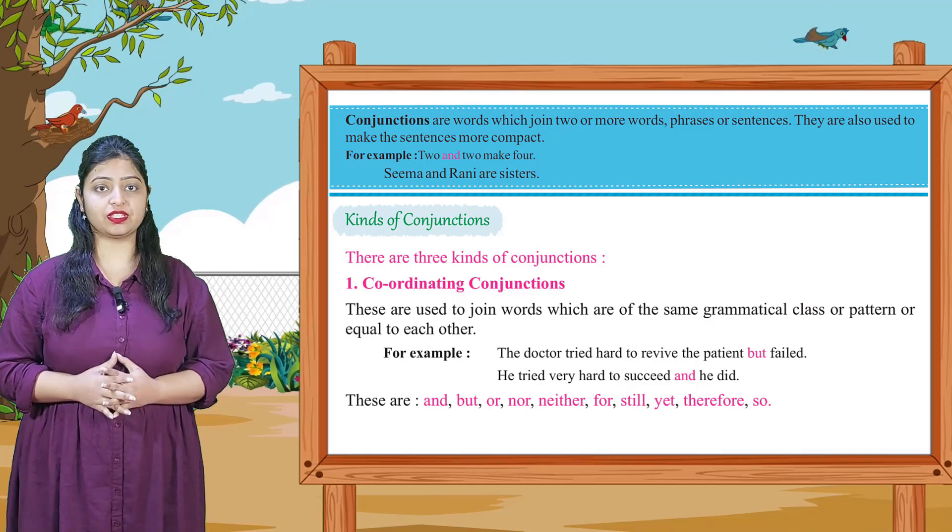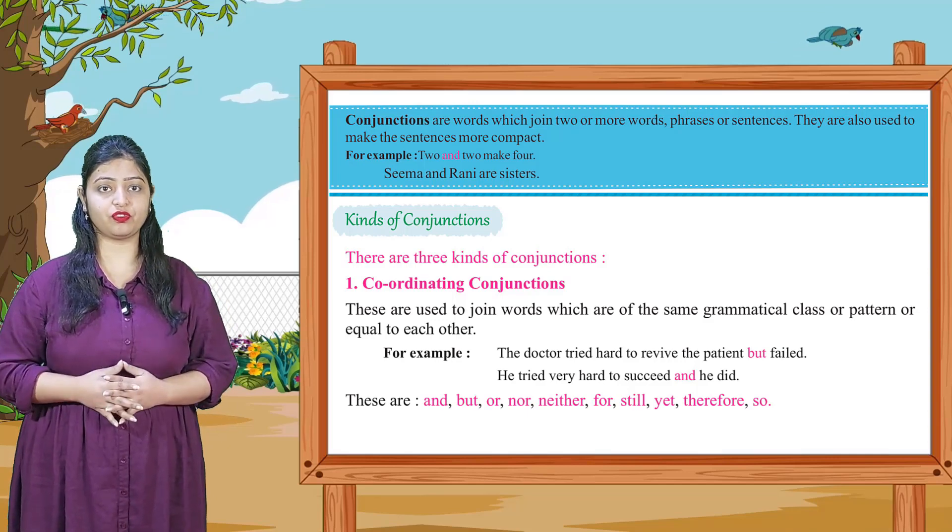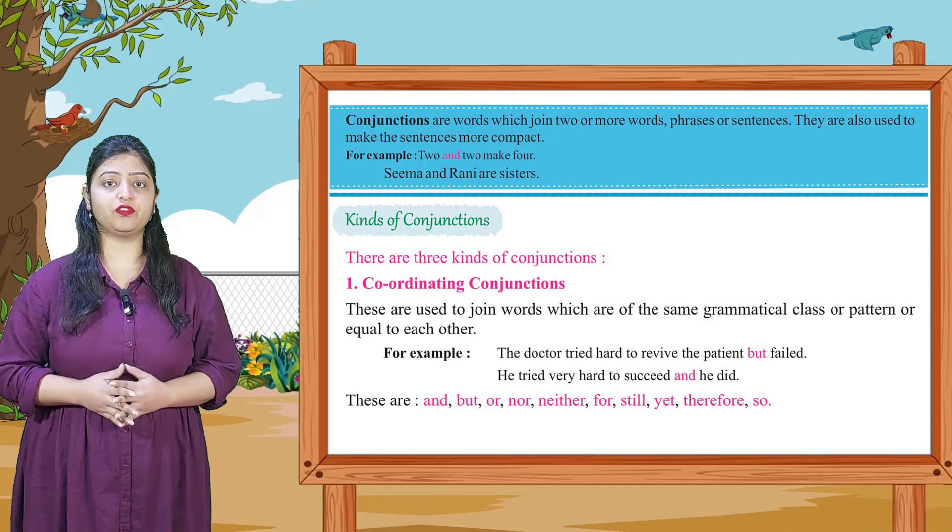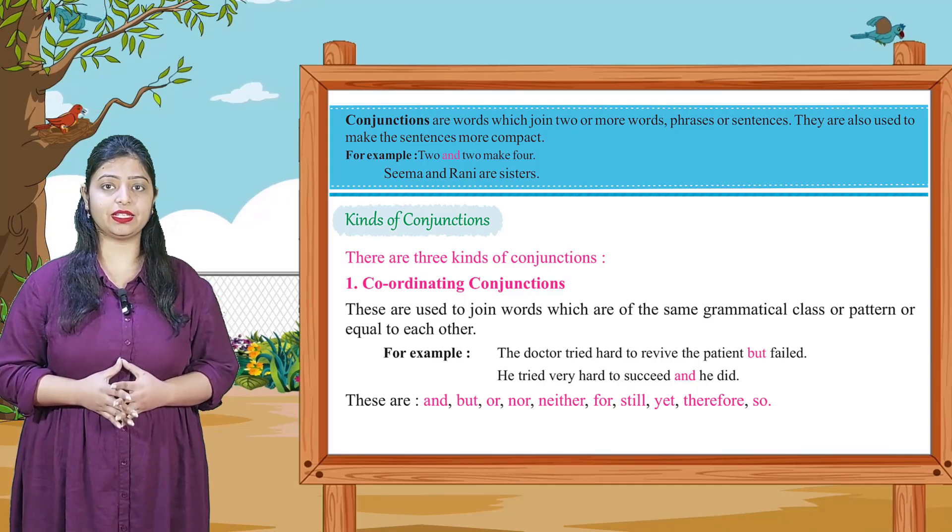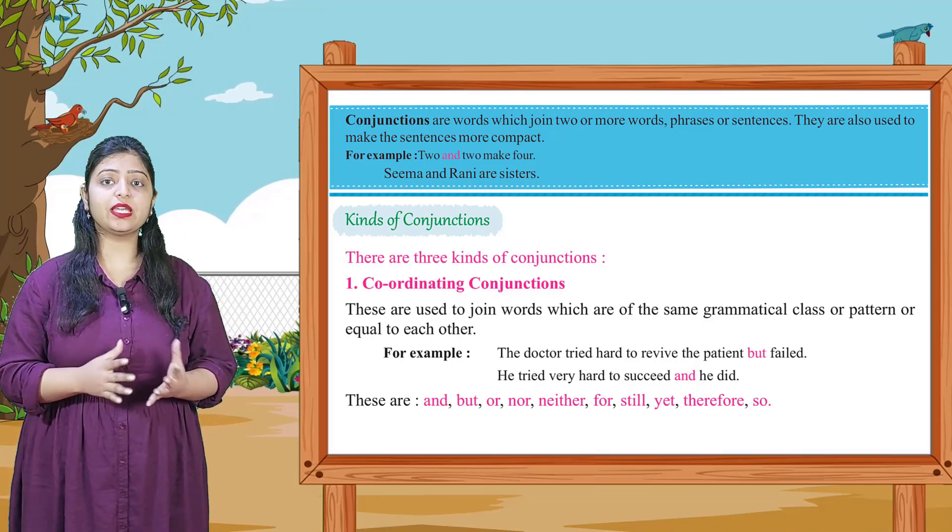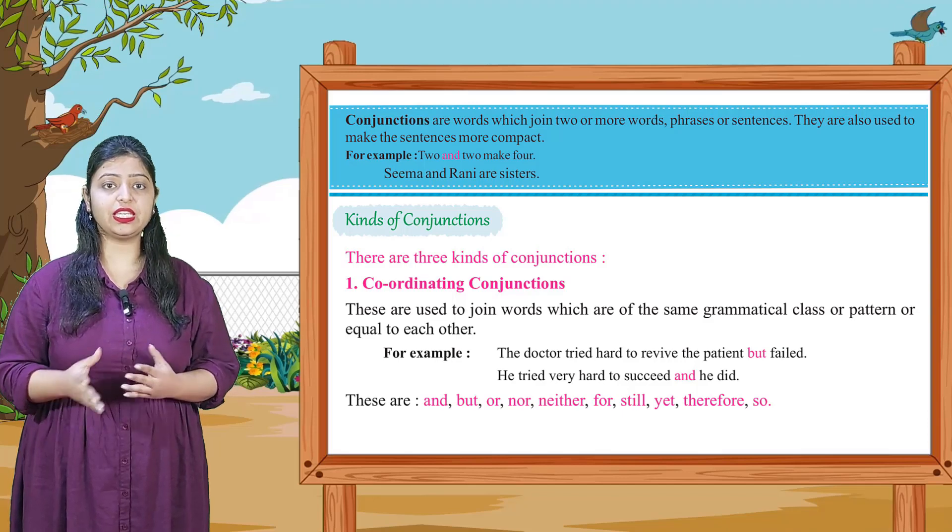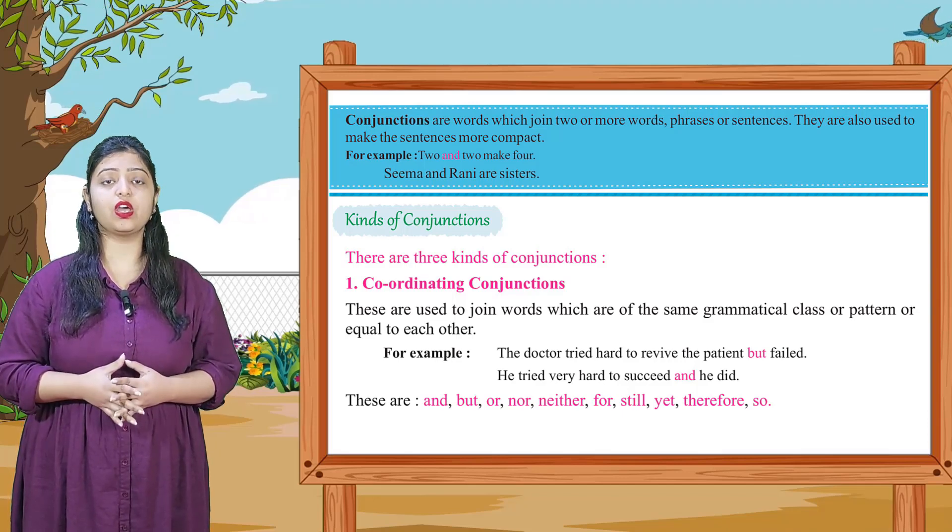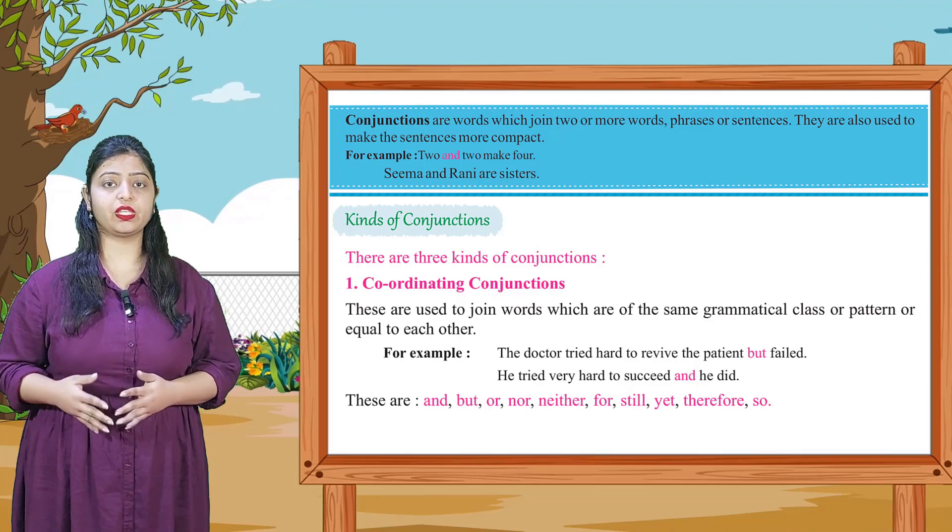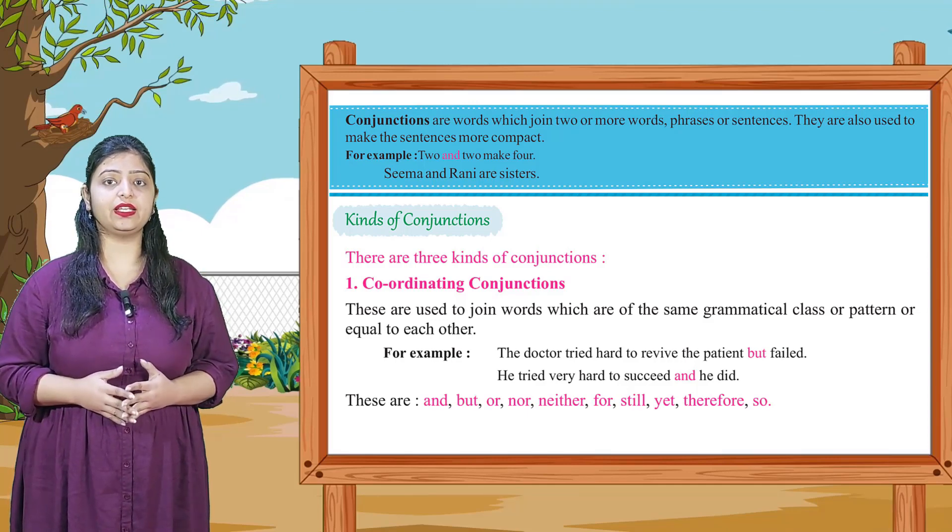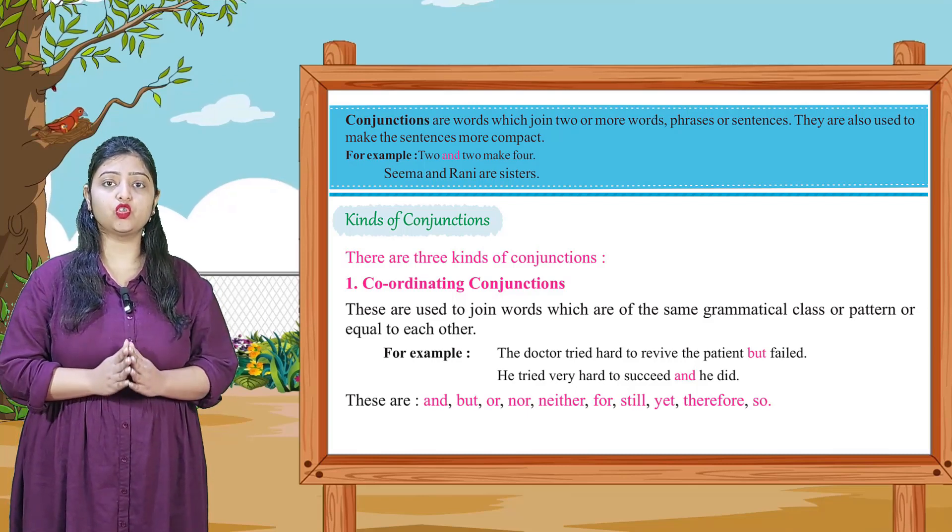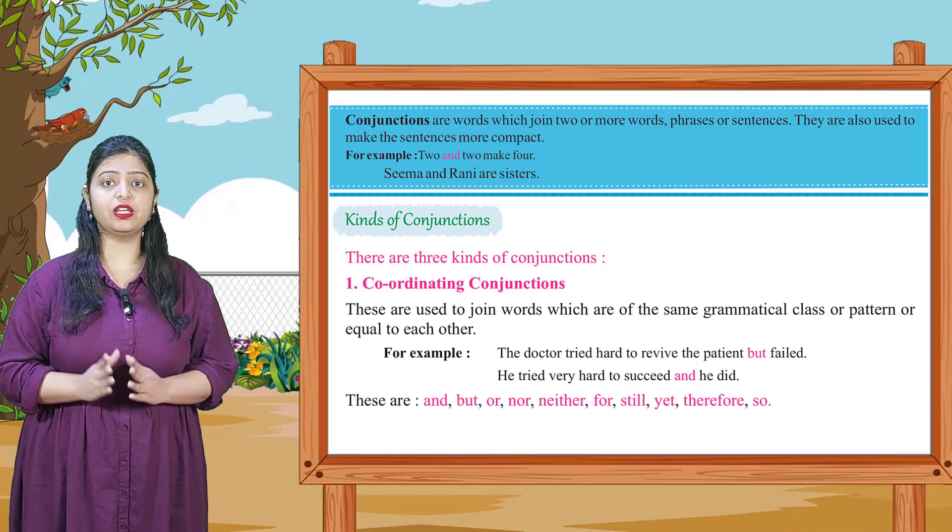There are three kinds of conjunctions. So coordinating conjunctions, these are used to join words which are of the same grammatical class or pattern. The doctor tried hard to revive the patient but failed. He tried very hard to succeed and he did. So we have two sentences joined together with the help of two words, which are but and and.